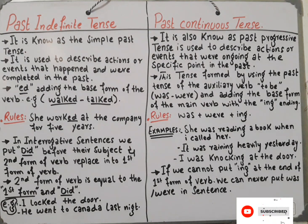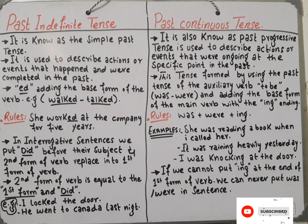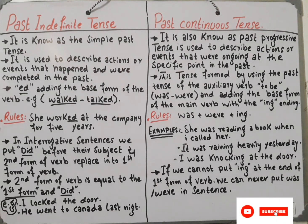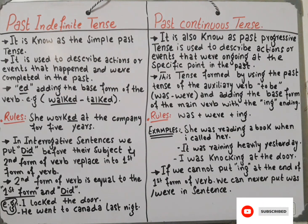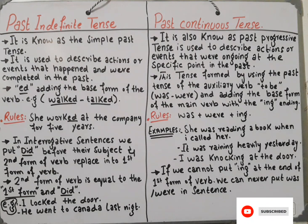Now I'm telling about past indefinite tense and past continuous tense, their rules, their examples, and how we can write sentences in the form of past indefinite and past continuous tense. First of all, we have a definition of past simple. What is past simple tense? The past simple tense, also known as the past indefinite tense, is used to describe actions or events that happened and were completed in the past.